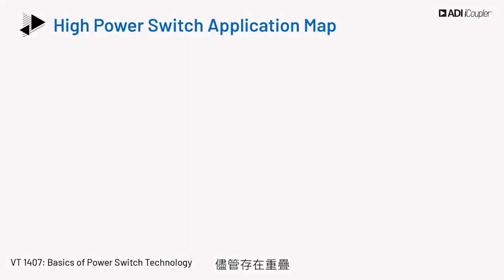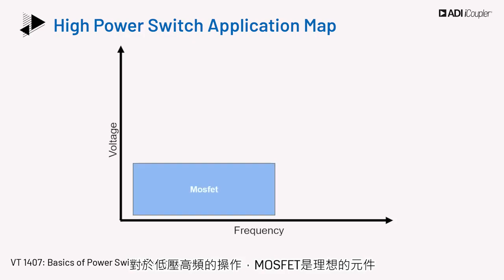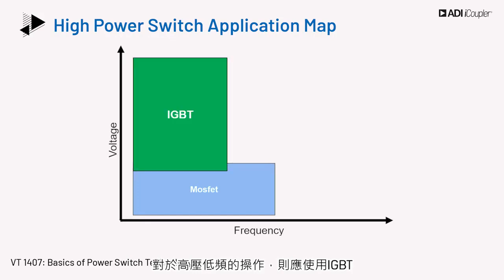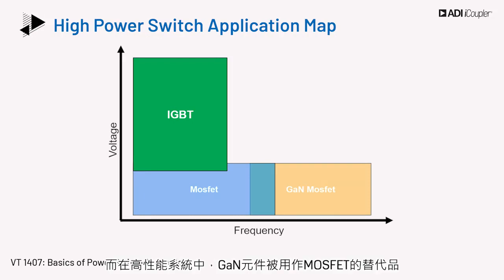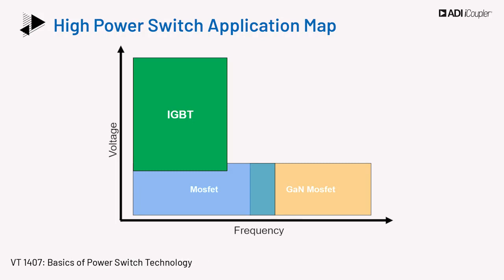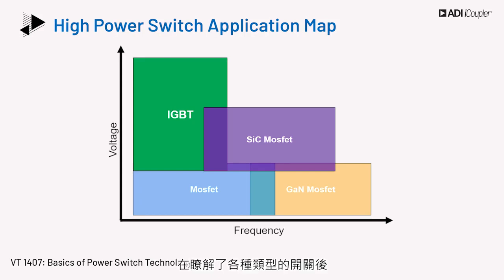The application space for devices is different with respect to voltage and frequency, even though there is an overlap. For low voltage, higher frequency operation, the device of choice is the MOSFET. For higher voltage, lower frequency operation, IGBTs are used. Due to the limits on fabrication technology with gallium nitride, presently those are only used for lower voltage, high frequency applications, and GaN devices are used as a replacement for the MOSFET in high performance systems. Meanwhile, silicon carbide is substituted for the IGBT in higher voltage application spaces due to silicon carbide's advantage of higher frequency operation.